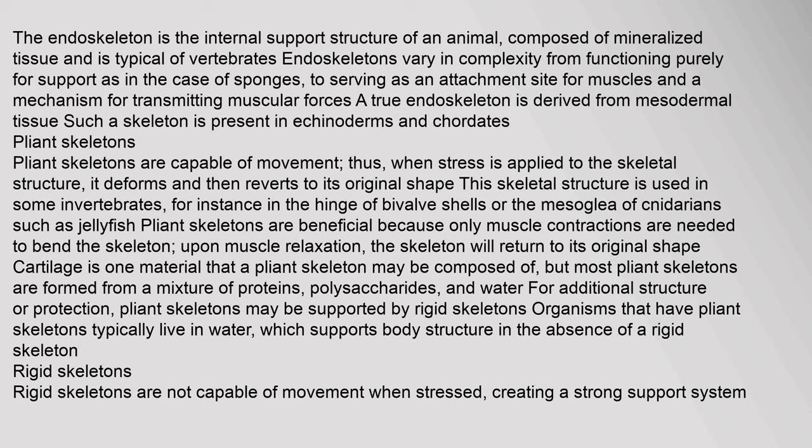Pliant skeletons are capable of movement; when stress is applied to the skeletal structure, it deforms and then reverts to its original shape. This skeletal structure is used in some invertebrates, for instance in the hinge of bivalve shells or the mesoglea of cnidarians such as jellyfish. Pliant skeletons are beneficial because only muscle contractions are needed to bend the skeleton; upon muscle relaxation, the skeleton will return to its original shape. Cartilage is one material that a pliant skeleton may be composed of, but most pliant skeletons are formed from a mixture of proteins, polysaccharides, and water.